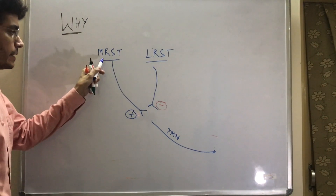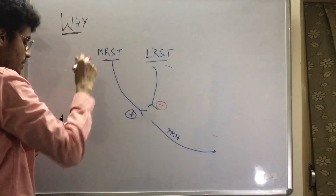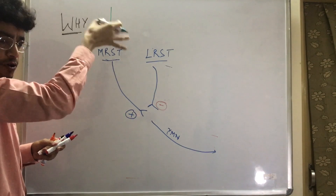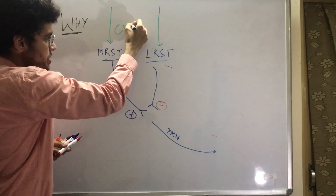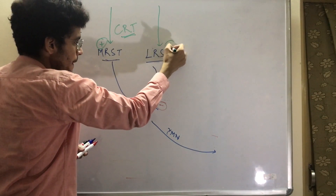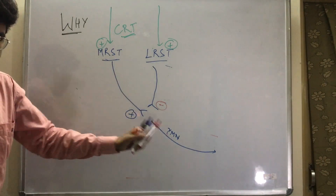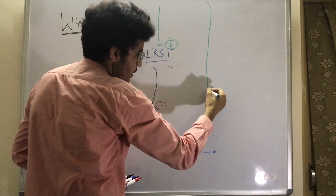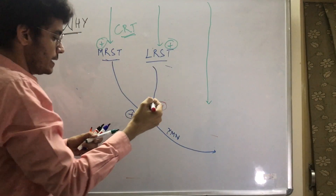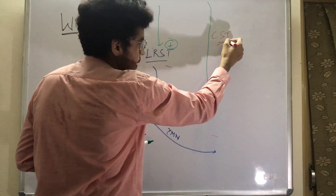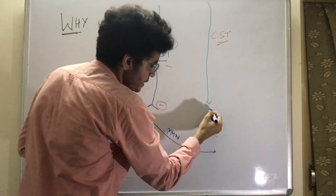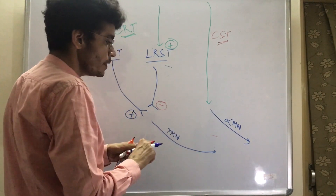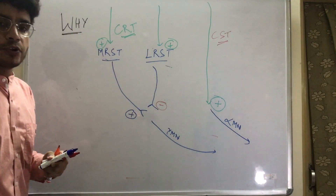The cortico-reticular tract stimulates both the medial and lateral reticulospinal tracts. Separately, tracts that come directly from the cortex and end at the spinal cord are called the corticospinal tract. The corticospinal tract innervates the alpha motor neuron and is stimulatory to it.